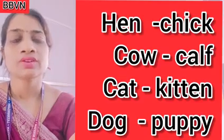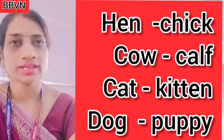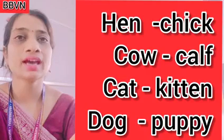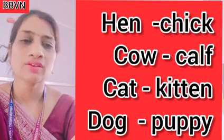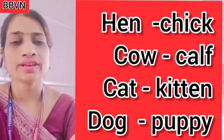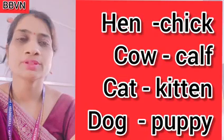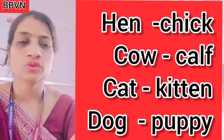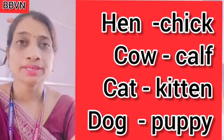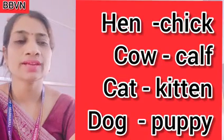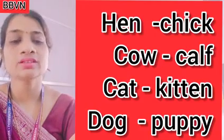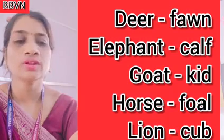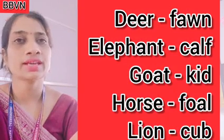The baby of hen is known as chick. Next is cow — the young one of cow is called calf, C-A-L-F. Hen → chick, cow → calf. Next, cat — the baby of cat is called kitten, K-I-T-T-E-N. Next, the young one of dog is called puppy, P-U-P-P-Y. Next is deer — the baby of deer is called fawn, F-A-W-N. Next is elephant — the baby of elephant is also called calf. So both cow and elephant babies are called calf.